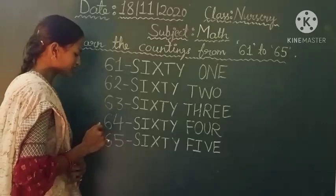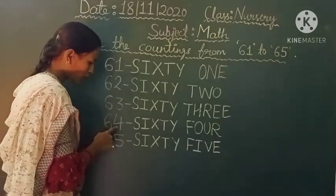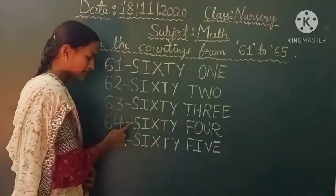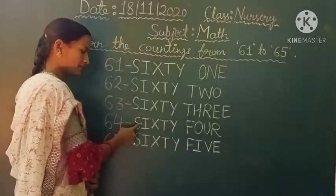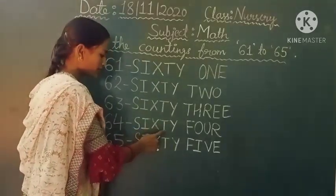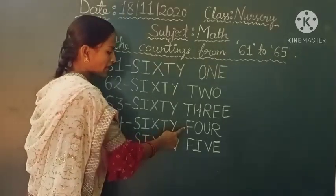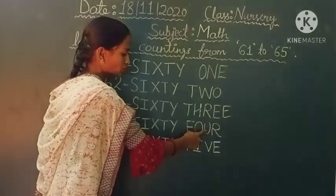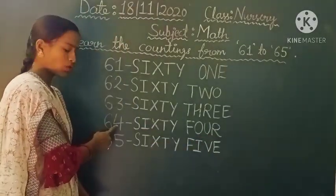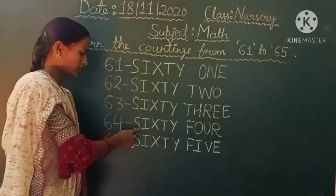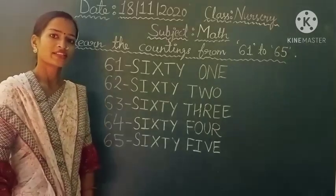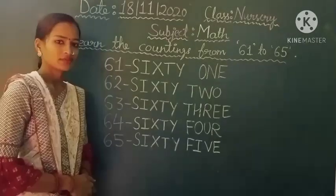Now come to the next counting. 64. 64. S-I-X-T-Y. 60. F-O-U-R. 4. 64. 64. Okay students.